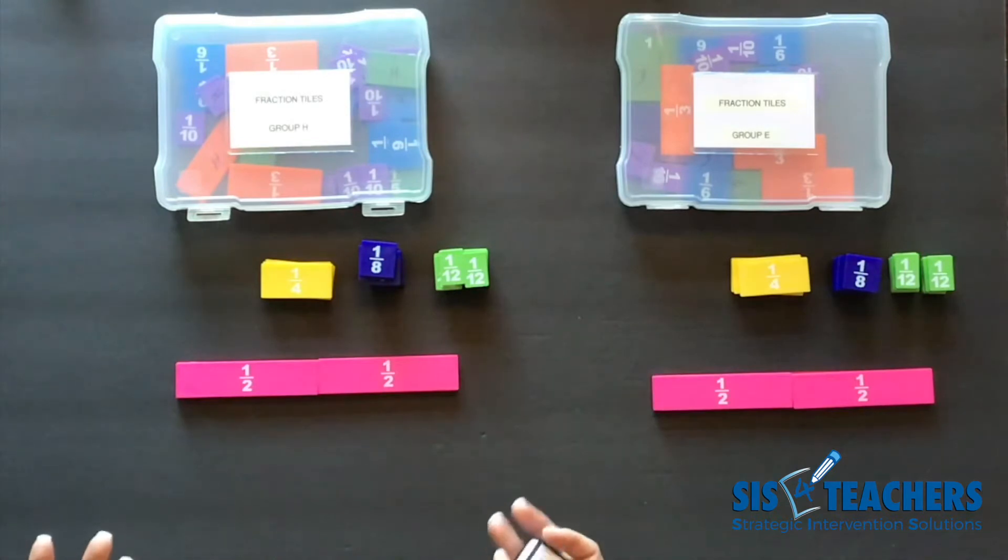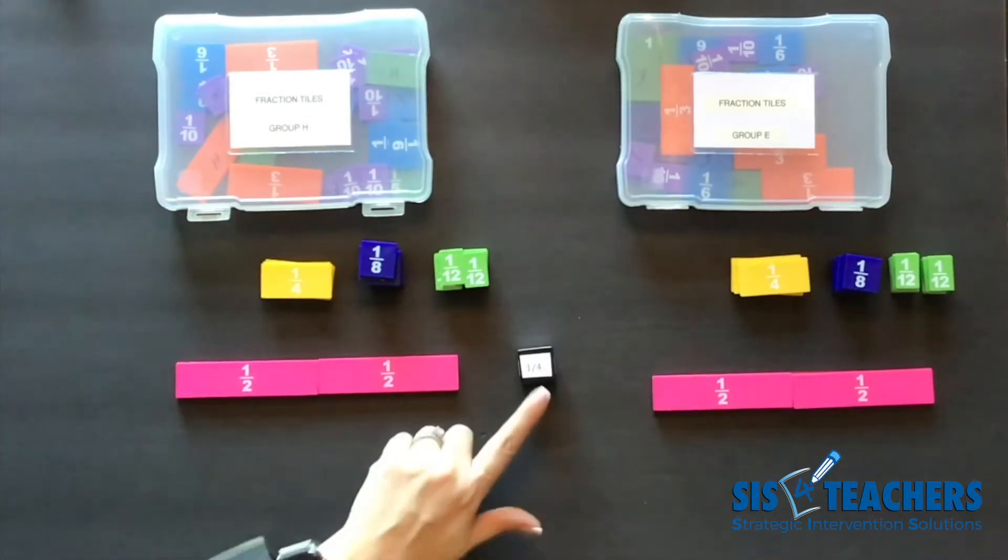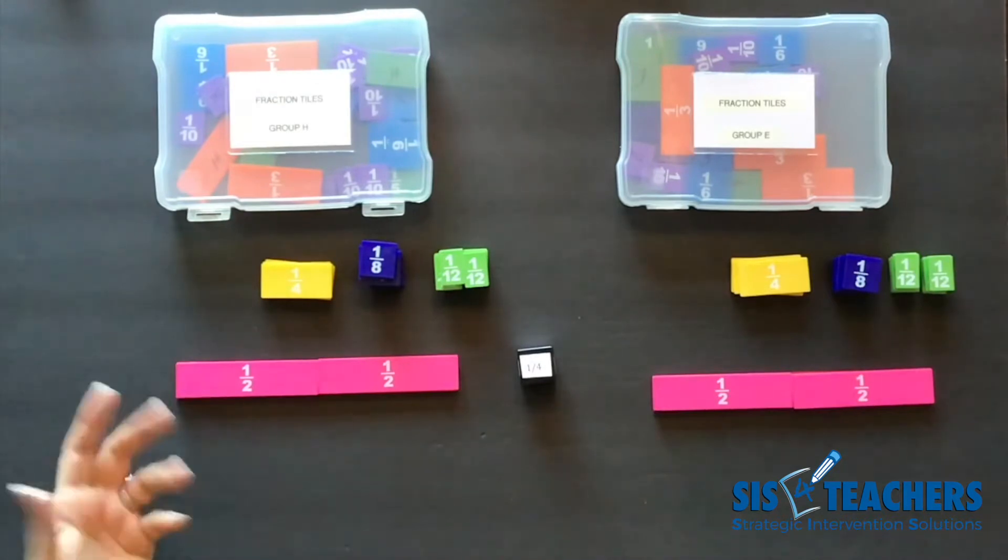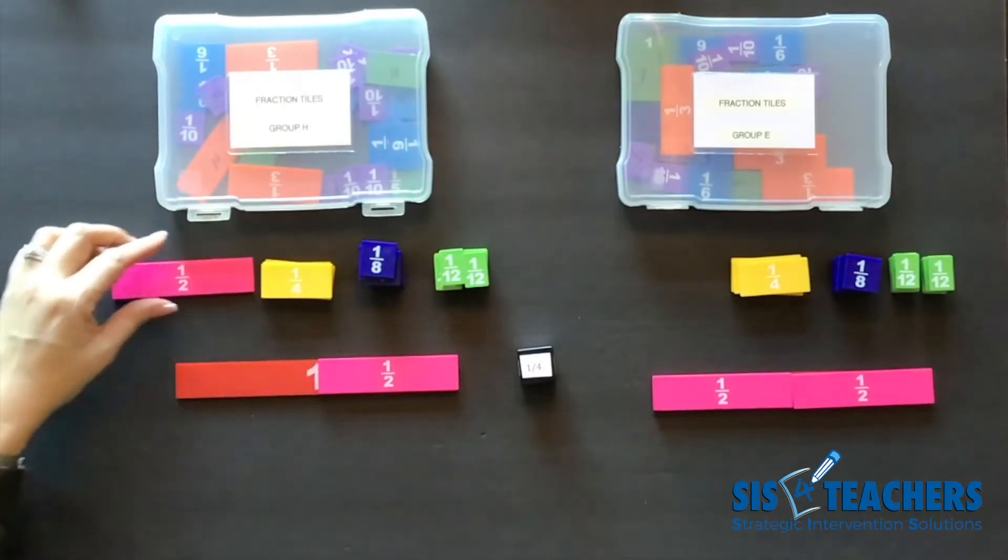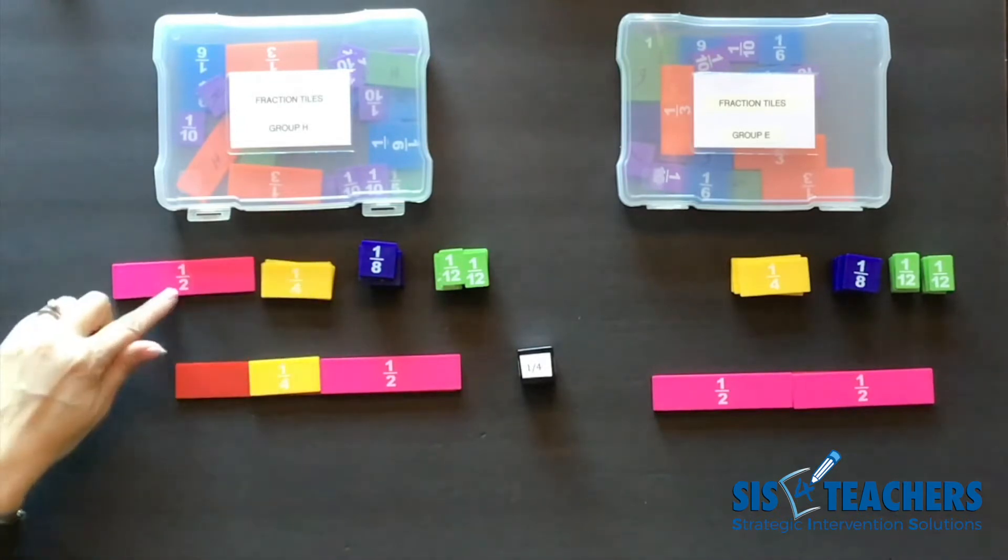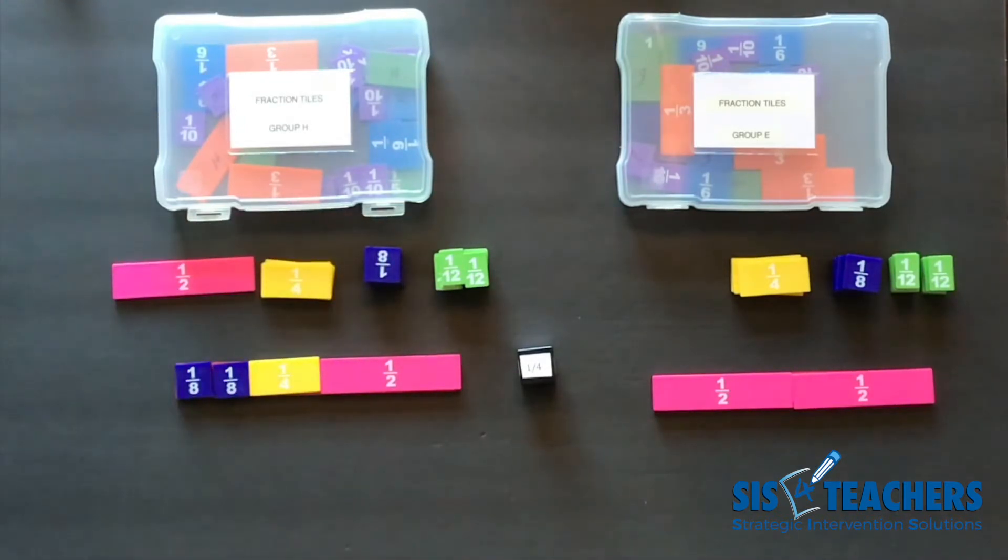In this game, you have a few different options as you roll the die to uncover. First of all, if I have 1/4 and I want to pull off 1/4, I can't do that, but I might want to trade out a piece. So I might decide to trade a piece out with a piece that's equivalent to 1/2, which would be 1/4 and 2/8.